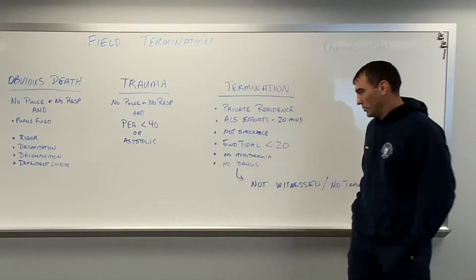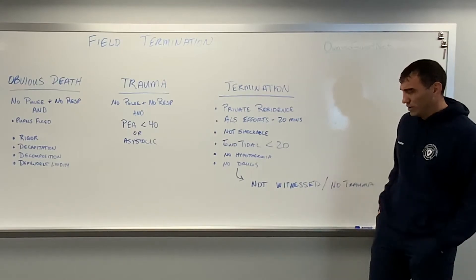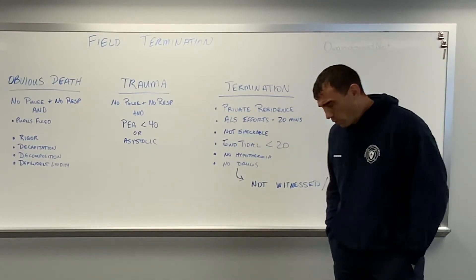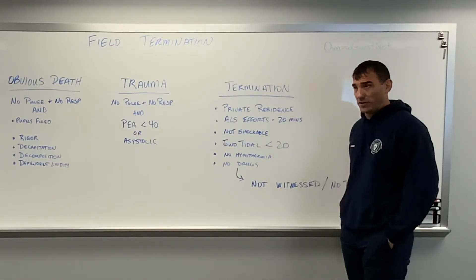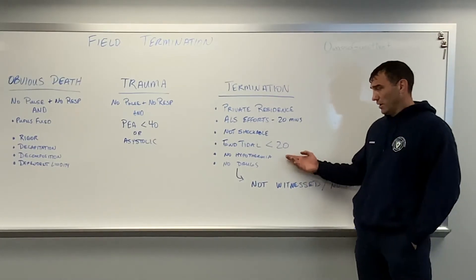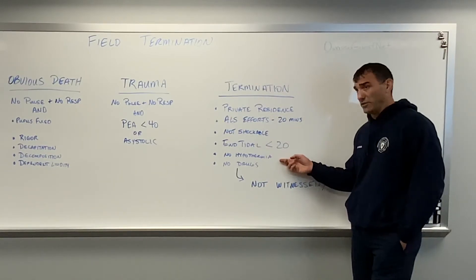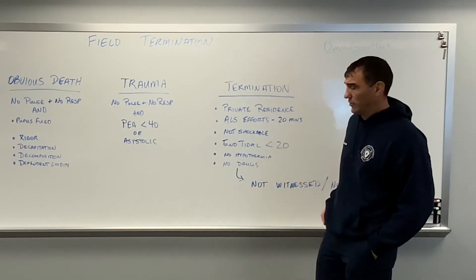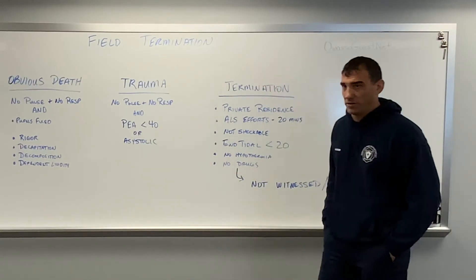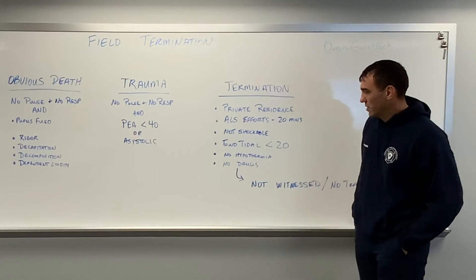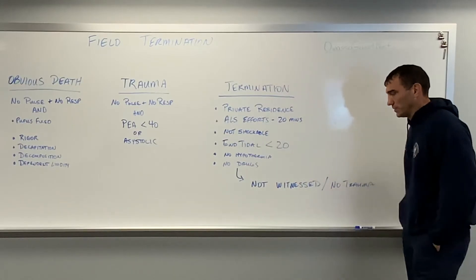Last on the protocol list: no hypothermia and no drugs. We don't deal with hypothermia too much, but for example, if a patient was outside during an ice storm and in cardiac arrest, you cannot terminate that person. Even if it's technically a private residence at the nursing home doorstep — if the patient could be thought to have hypothermia, or their heat went out and they may have been hypothermic in the house — you have to transport. They have to be warm and dead; we cannot leave a hypothermic patient.